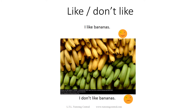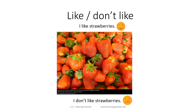Here we have bananas. The yellow bananas are ripe; the green bananas are not quite ready to eat yet. You can say 'I like bananas' or 'I don't like bananas.' And here are the strawberries — 'I like strawberries' or 'I don't like strawberries.'